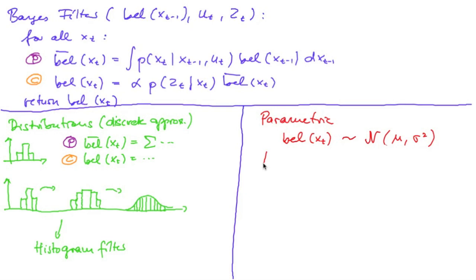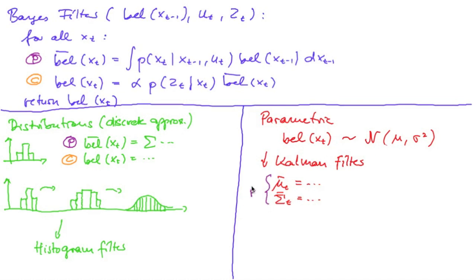This has led to the Kalman filter equations, which were of the form mu_t and sigma_t, the covariance matrix, which computed the prediction step, and then a Kalman gain and our new mu_t, now without an overline, and variance sigma_t. Those three formulas were the correction step.